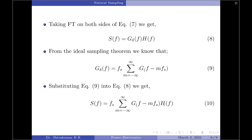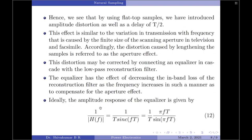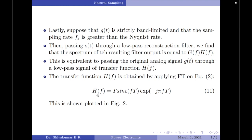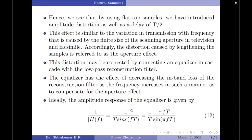To eliminate H(f), this distortion may be corrected by connecting an equalizer in cascade with the low-pass reconstruction filter at the receiver. The equalizer should decrease the in-band loss of the reconstruction filter as frequency increases, to compensate for the overall effect of flat top sampling. Ideally, the amplitude response of the equalizer should be 1 divided by the magnitude of H(f), as shown here.